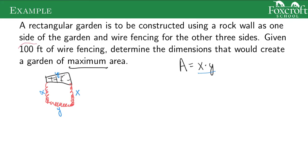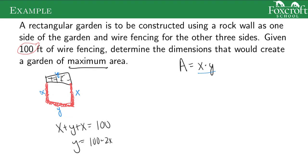The way we're going to do that is with the 100 feet of fencing. Based on our picture, if I add x plus y plus x, that's going to equal 100, because those are the three parts of my fence that add up to 100 feet. That tells me that y equals 100 minus 2x.